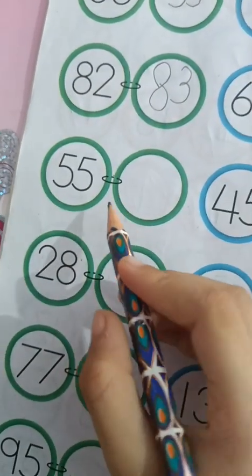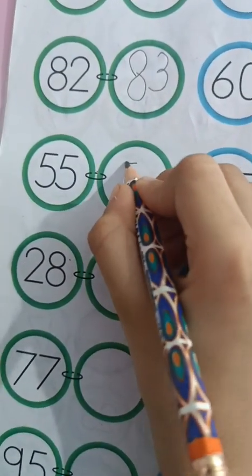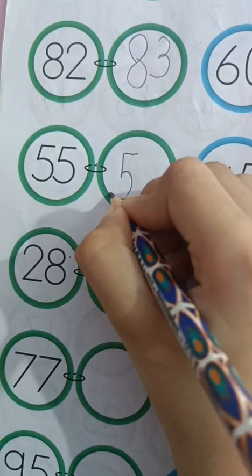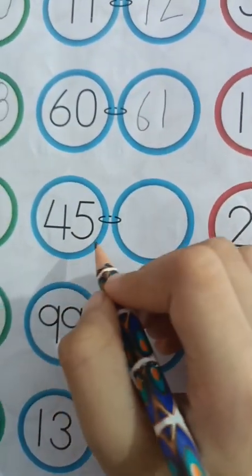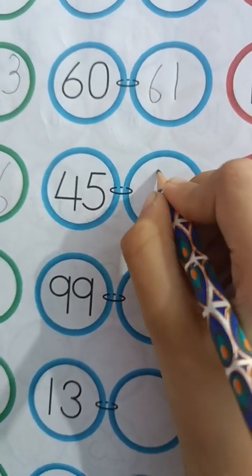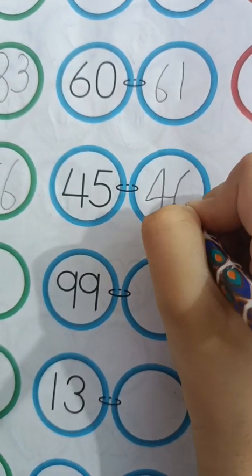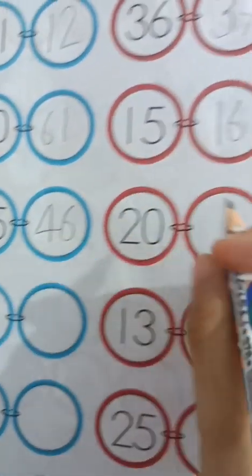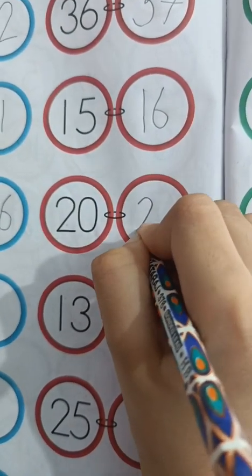55. 55 ke baad aata hai 56. 56 comes after 55. 45 ke baad aata hai 46. 46 comes after 45. 20 ke baad aata hai 21. 21 comes after 20.